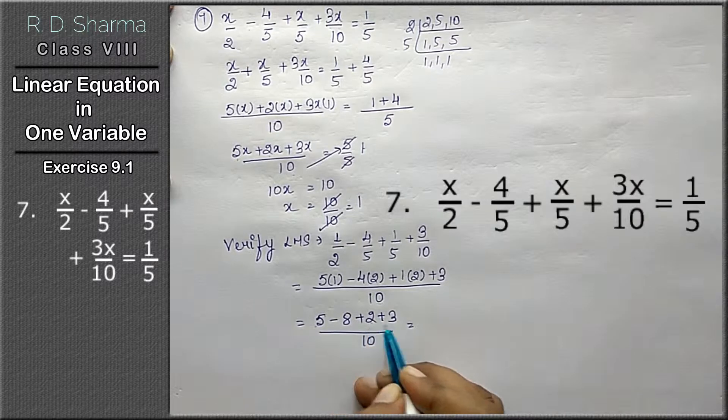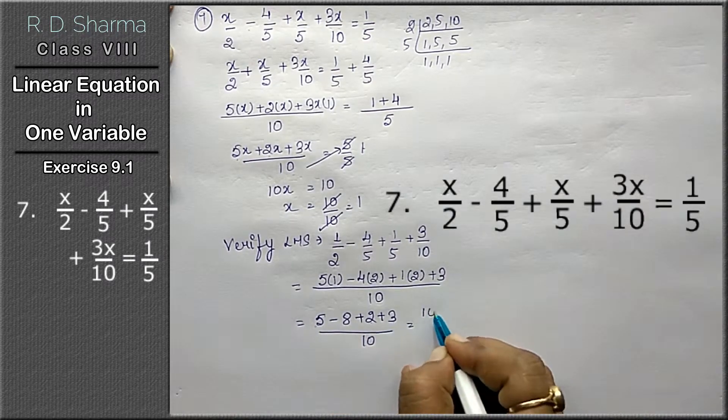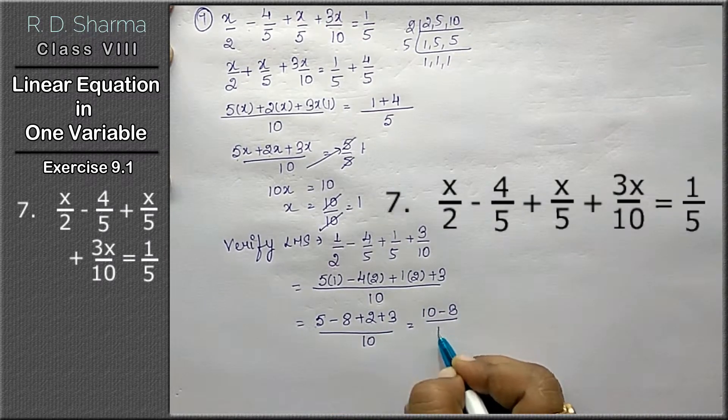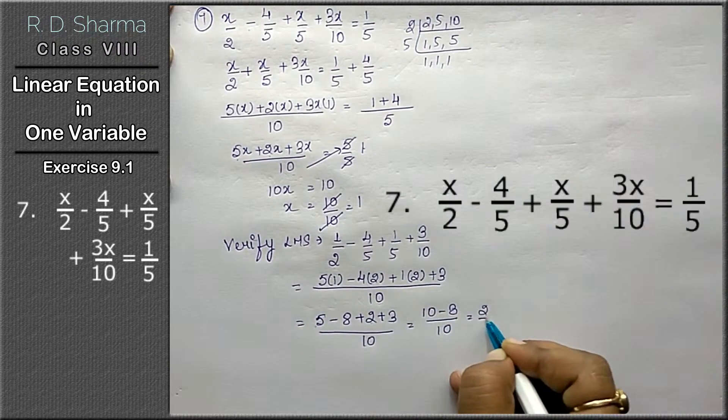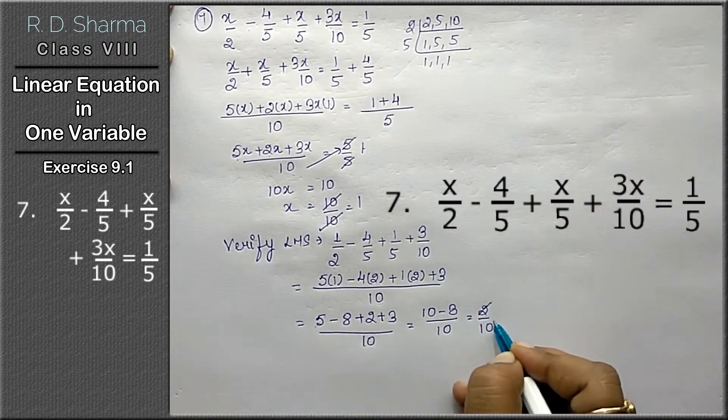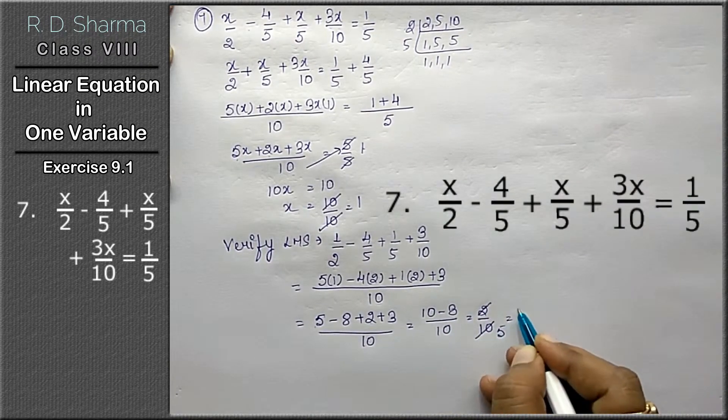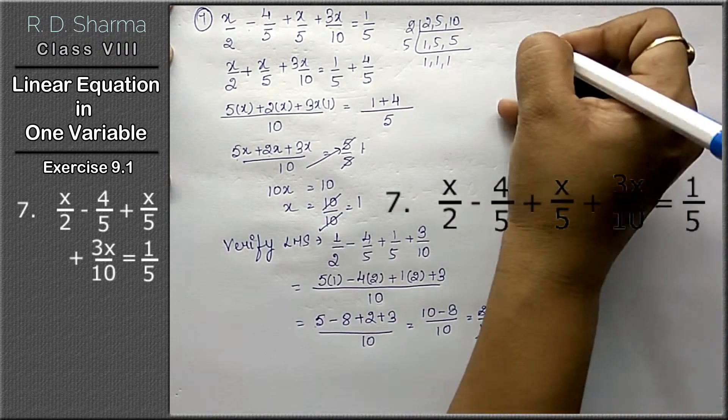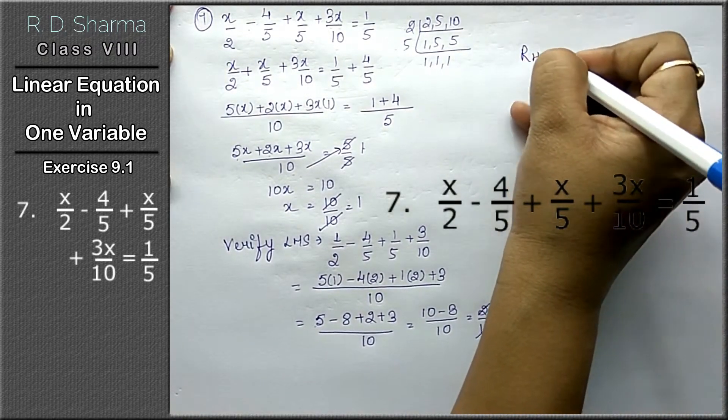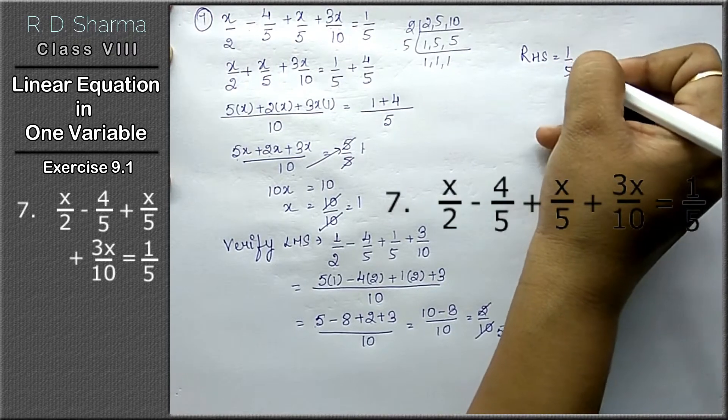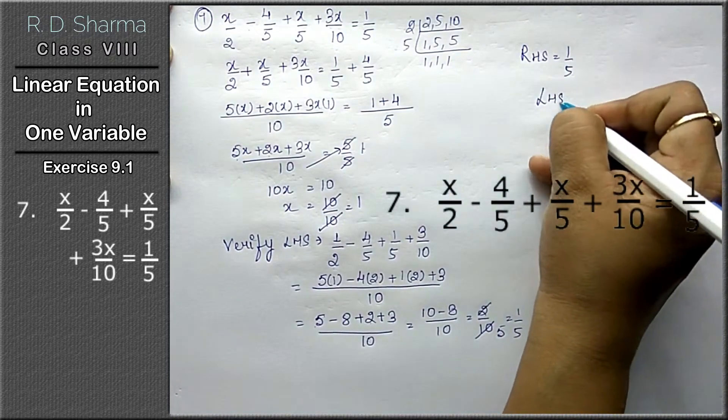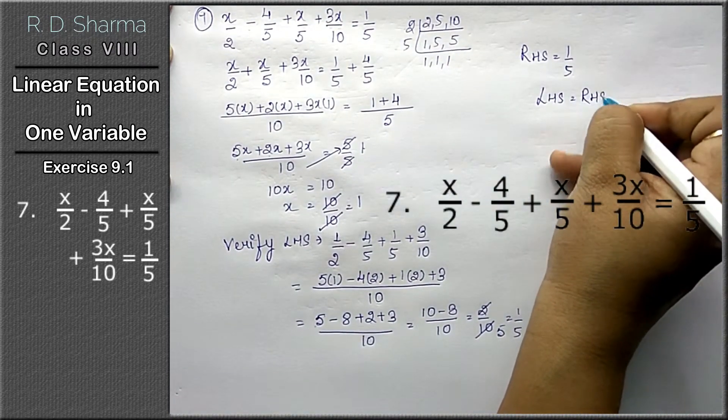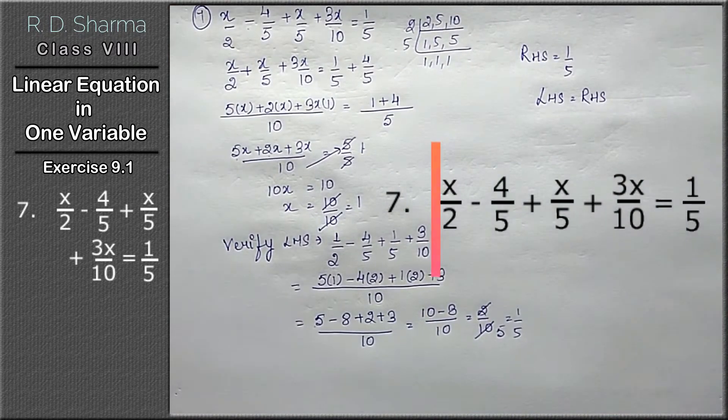5 plus 2 is 7, 7 plus 3 is 10. 10 minus 8 upon 10 is 2 upon 10. 2 divided by 2 is 1, 10 divided by 2 is 5, so 1 upon 5 is the answer. As we all know that right hand side is already 1 upon 5, that means left hand side equals right hand side.